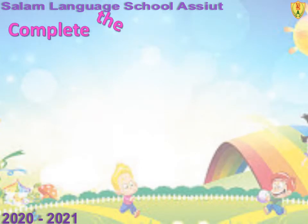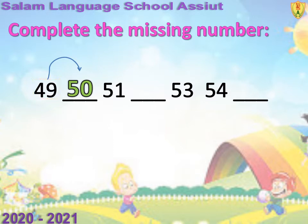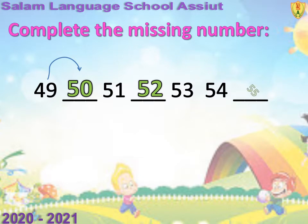Complete the missing number. أول number عندنا 49. After 49, 50. After 50, 51. 52. 53. 54. من يصحاب يقول after 54? 55. Bravo عليكم.